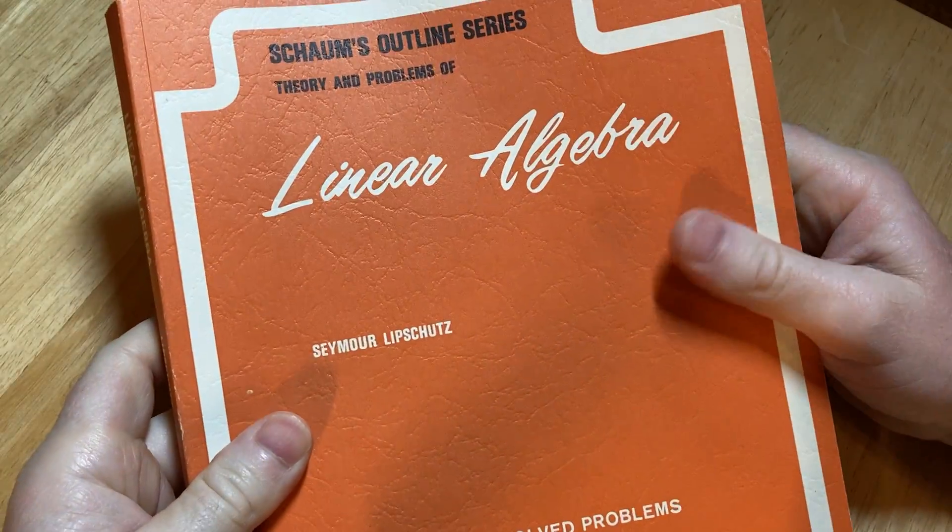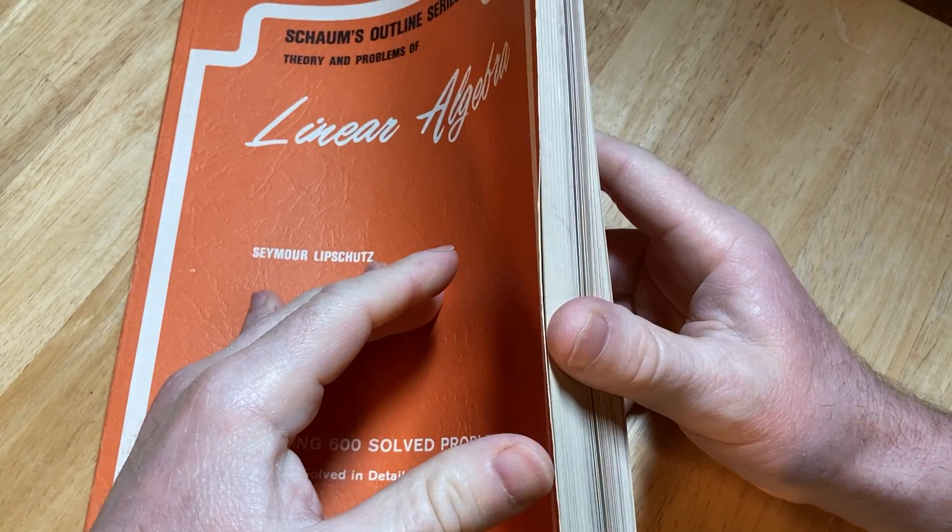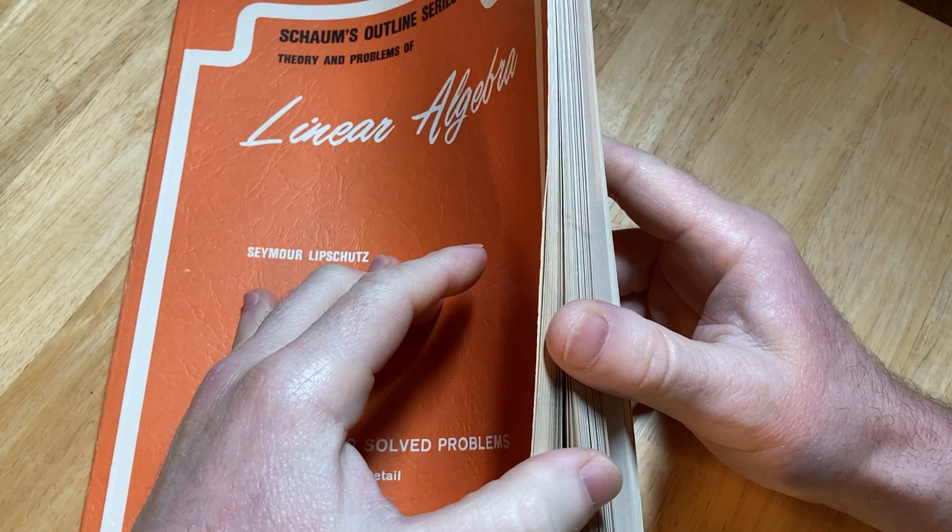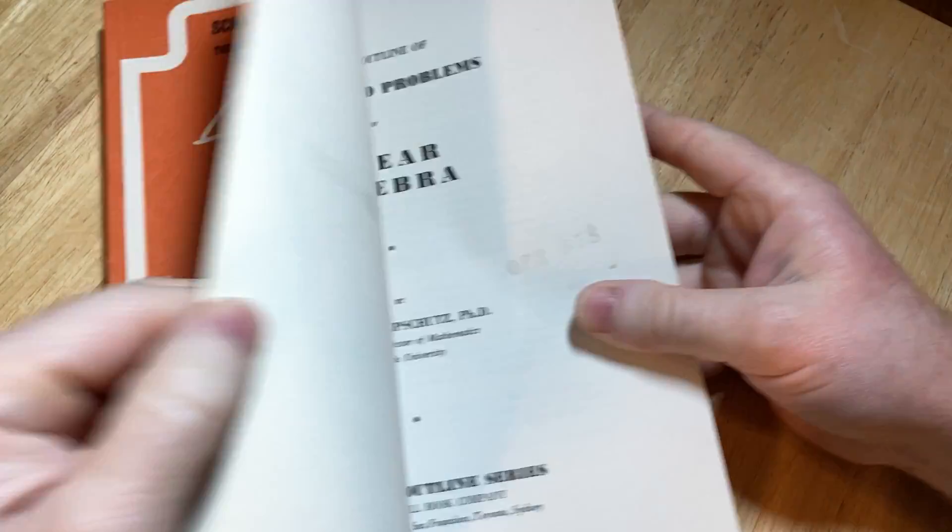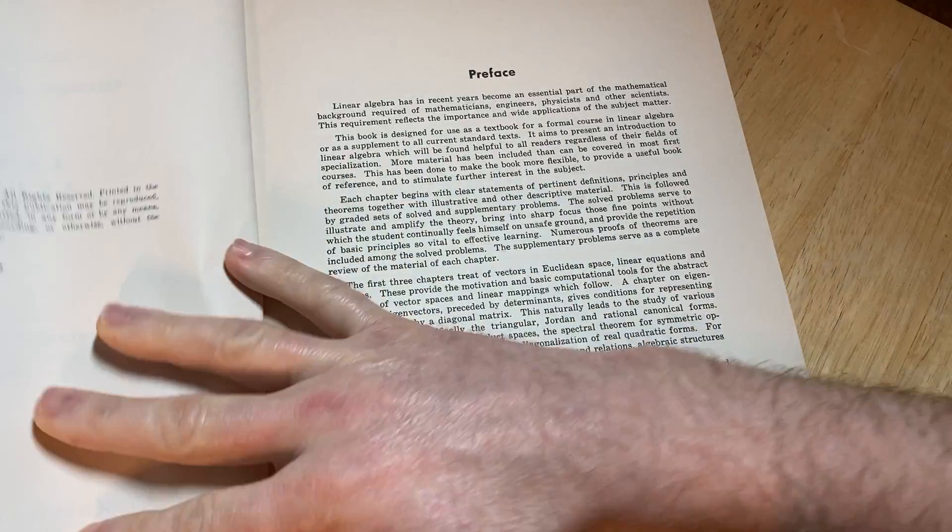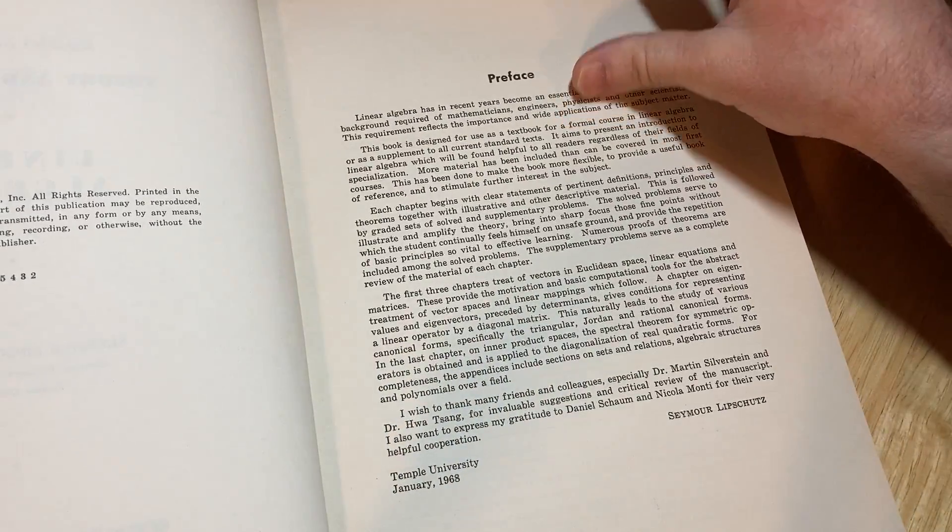And it's from the Schaum's Outline series. So I really like the Schaum's series because they have a lot of examples and they have a lot of solved problems, and everything is organized in a very encyclopedic way, so it's very easy to find things. This one is from 1968. This is probably the first edition. Seymour Lipschitz.